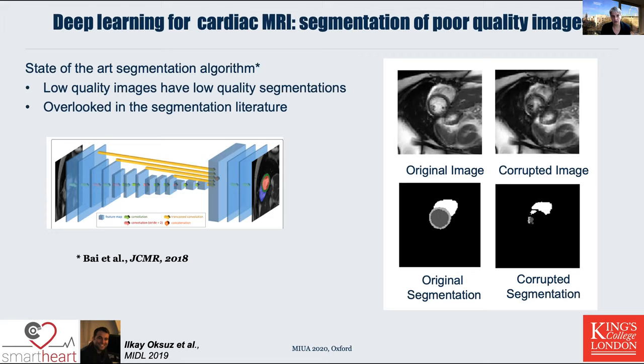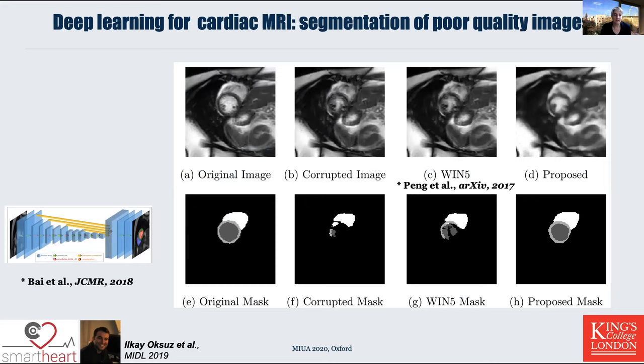Here you see on the left the original good quality image and the original segmentation, then the corrupted image and how the segmentation fails. We applied another method called WIN-5 for improving image quality — there is a slight improvement and the segmentation improves a little bit after applying that artifact correction. But when applying our proposed artifact correction, our segmentation actually looks really quite good. It is not perfect — not exactly the same as the original — but it's certainly useful information.